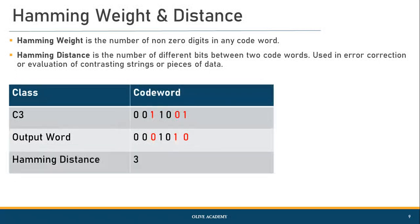Let us look at the third example with c3 and the output word. There are three different values differing between c3 and the output word, whereas the other values are identical. That is why we do not consider those, and thus the hamming distance in this example is three. All the differing bits are shown in red color.